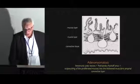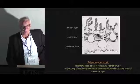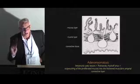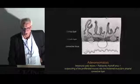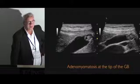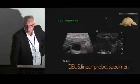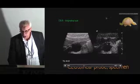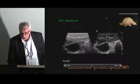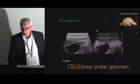Adenomyomatosis — you all know this. We have intramural cystic lesions, the Rokitansky-Aschoff sinuses, and we very often find calcifications or small stones in these cystic areas within the thickened gallbladder wall, making the diagnosis easy. This is adenomyomatosis at the tip of the gallbladder — a very typical finding. When we give contrast, we can confirm this is not a tumor invading the wall, and we can even see the Rokitansky-Aschoff sinuses a little better.